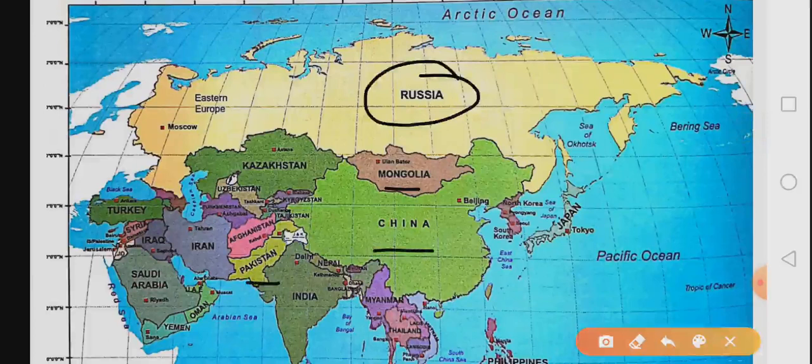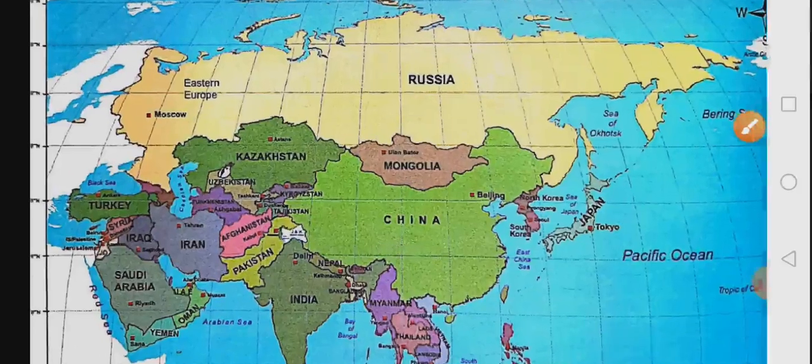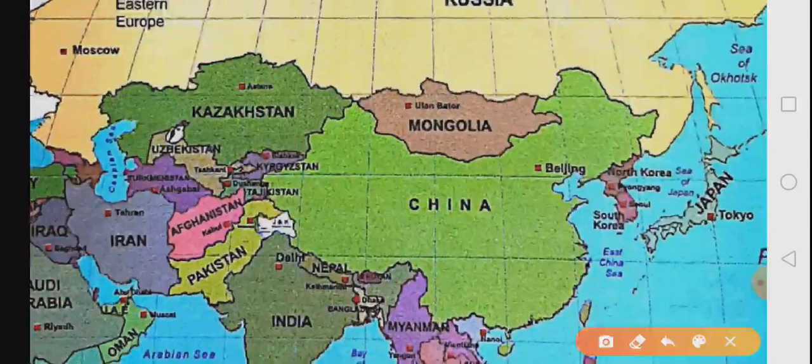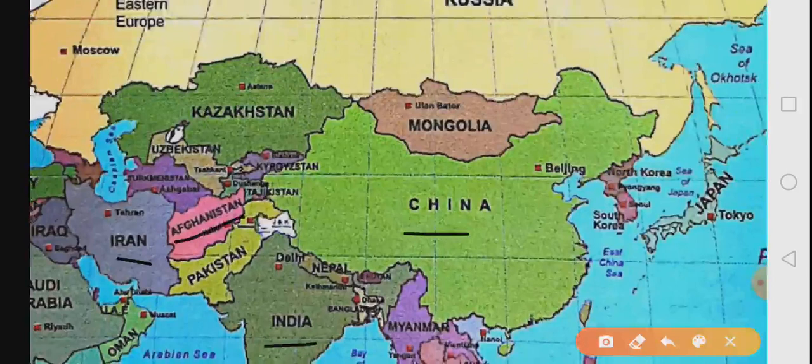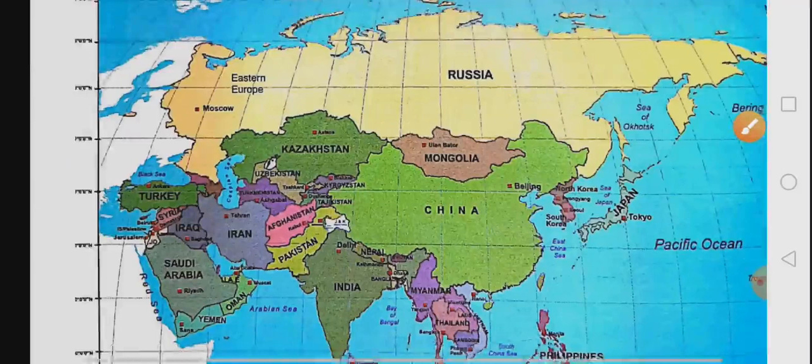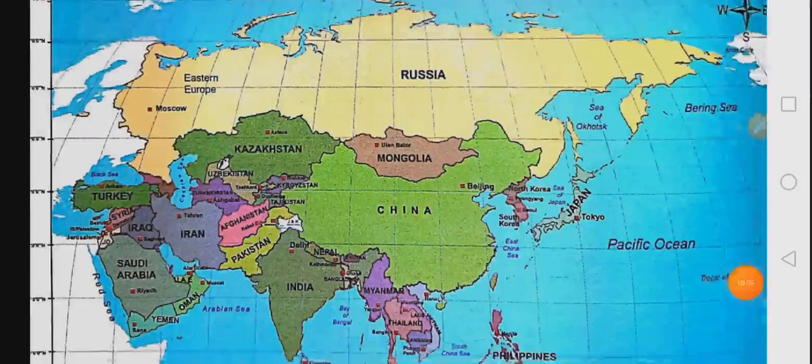Let us have a look at the neighbors of Pakistan. Here is India. Then Pakistan also shares its borders with Iran, Afghanistan and China. And then there is a sea in the south of Pakistan and its name is Arabian Sea. So, it is a detailed map of our continent Asia.